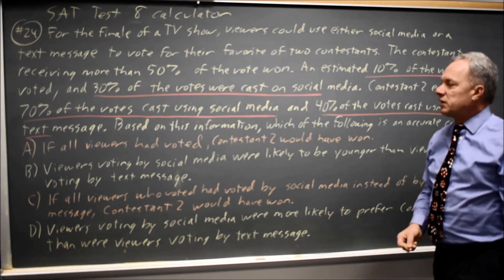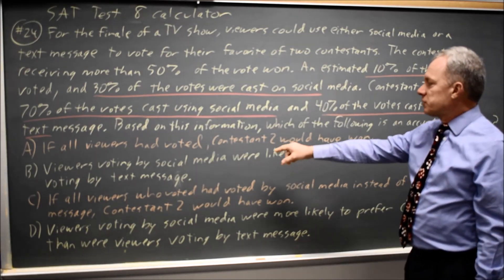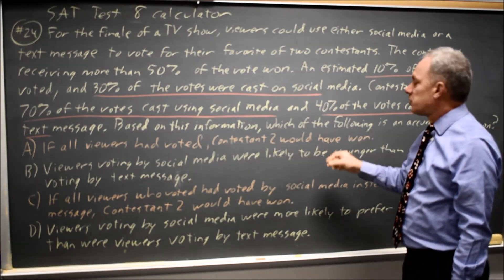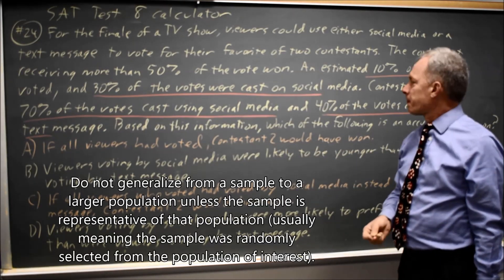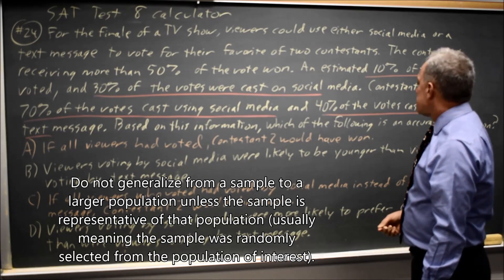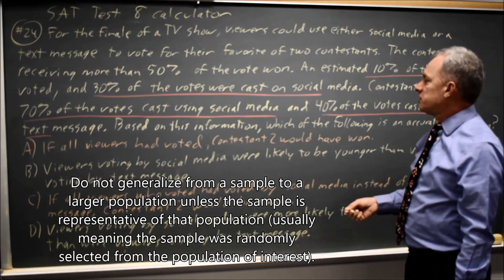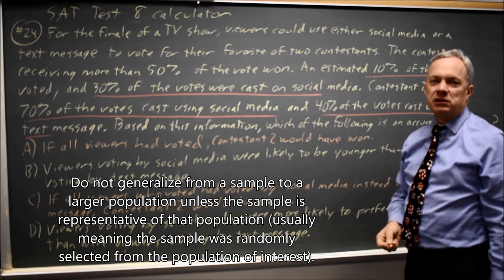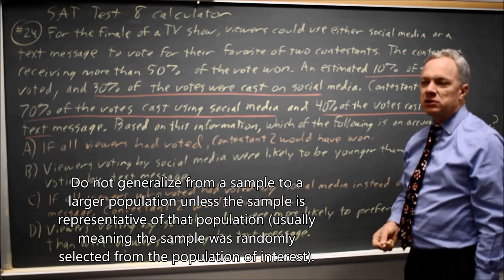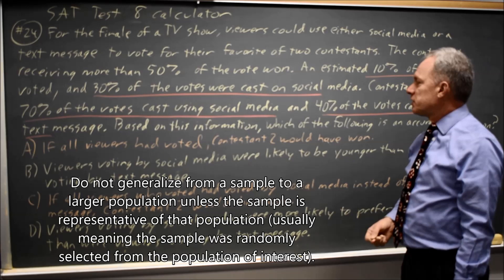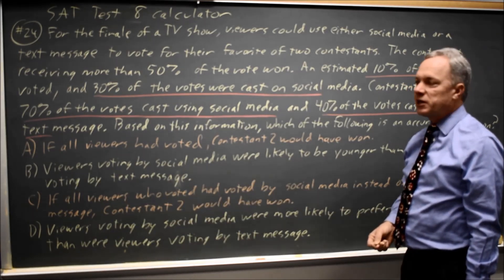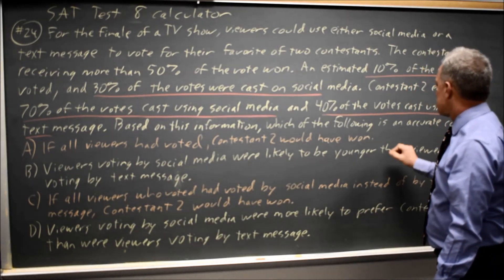Choice A: if all viewers had voted, contestant two would have won. Based on the information in the question, we don't know how the rest of the viewers would have voted, so we cannot draw this conclusion.